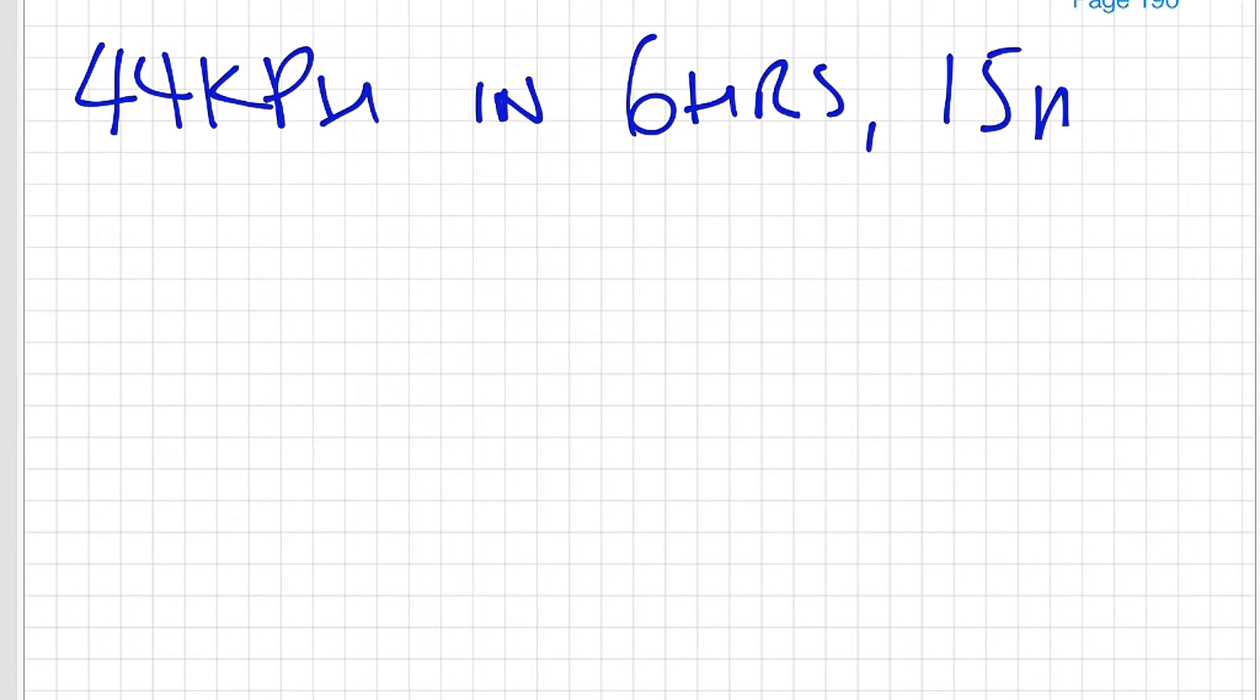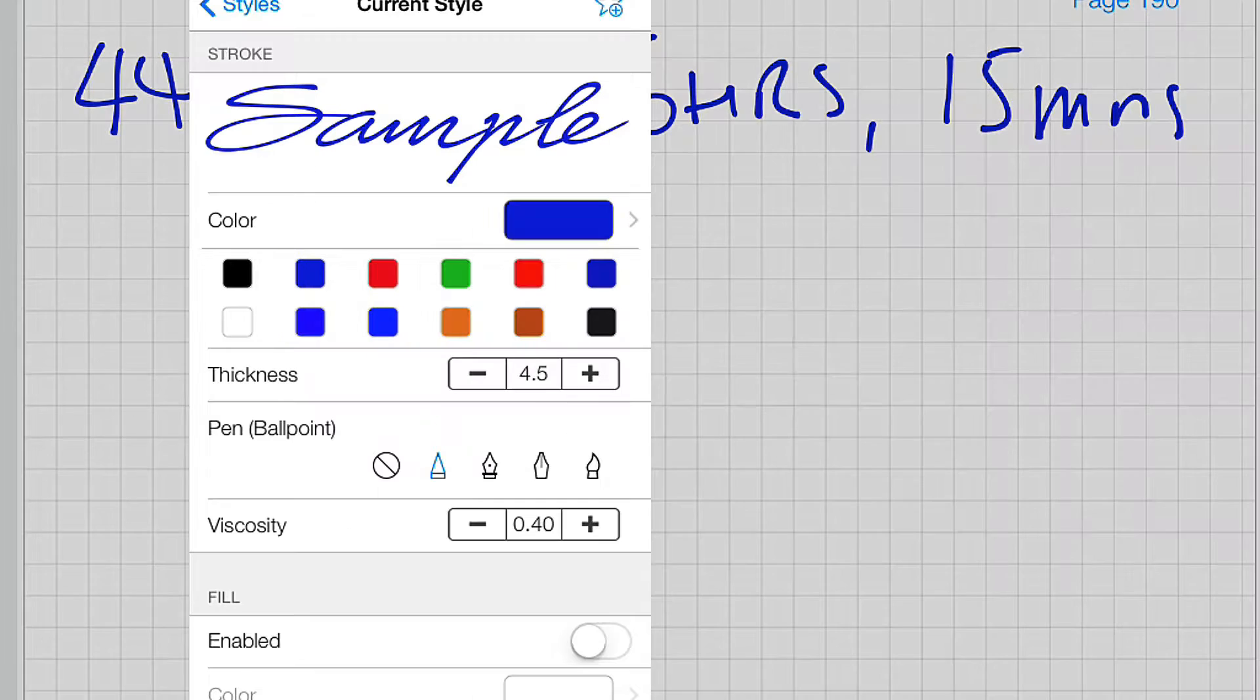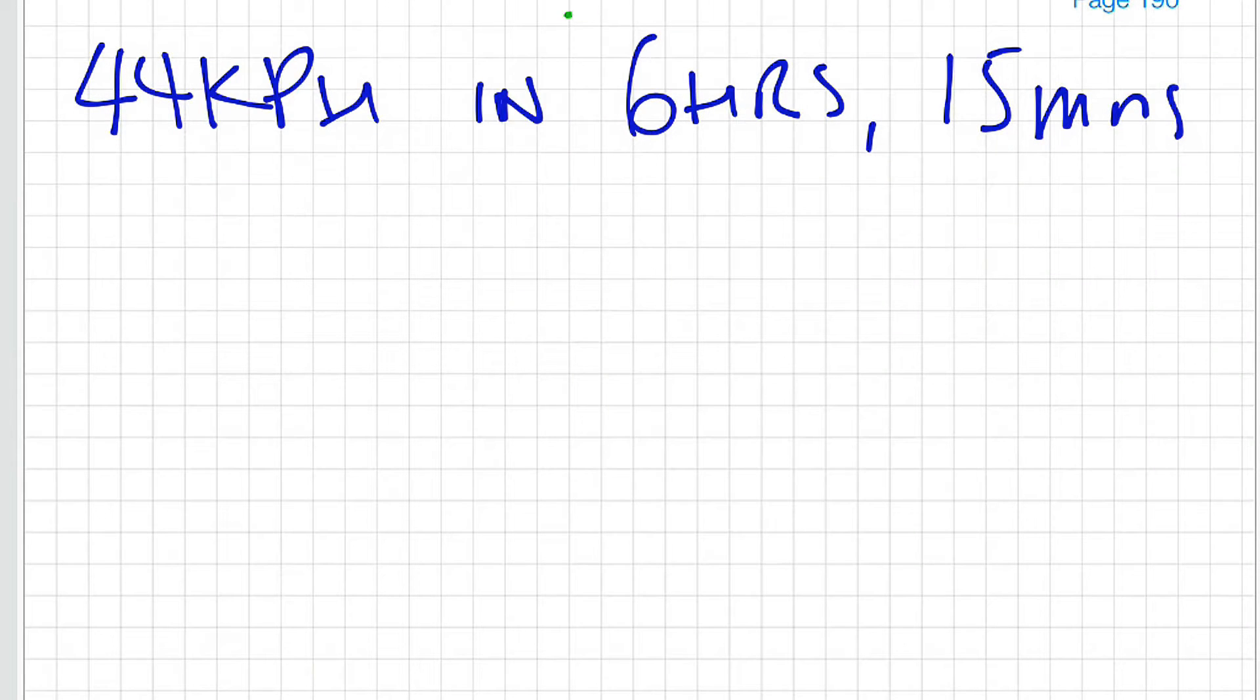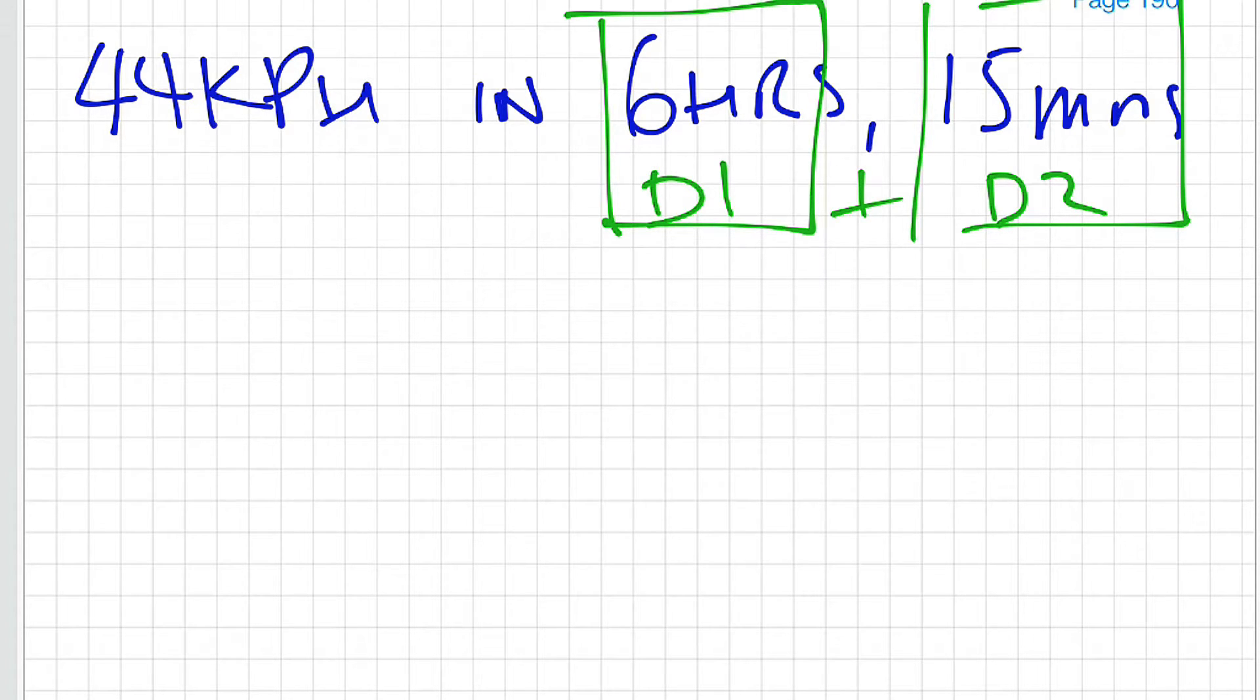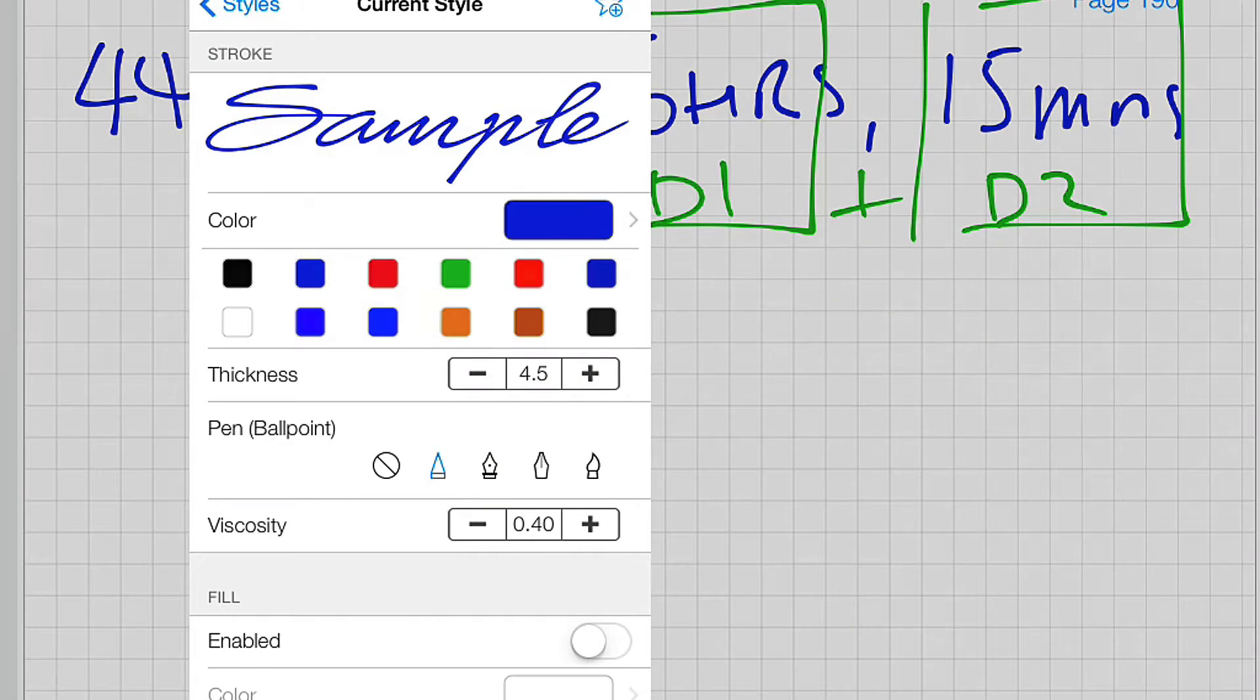The first question was a speed of 44 km per hour in a time of 6 hours and 15 minutes. One of the first things I would be doing is separating the hours from the minutes. We will call this distance 1, distance 2, and when we have done them individually we will add them back together.